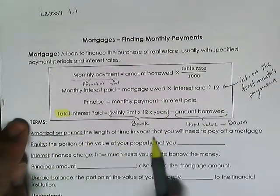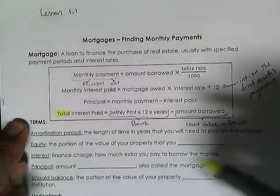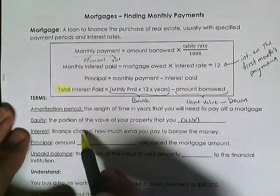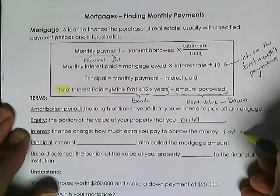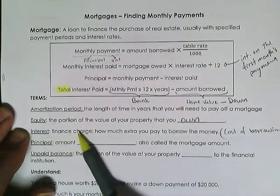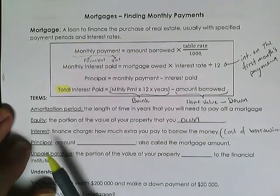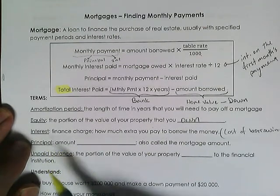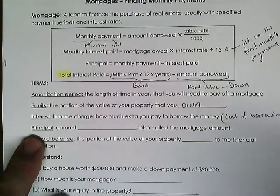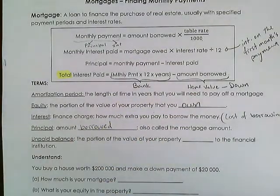Amortization period is the length of time in years you need to pay off a mortgage. Equity is the portion of the value of your property that you own. Interest is a finance charge — the cost of borrowing; it's how much extra you pay to borrow the money. Principal is the amount borrowed, also called the mortgage amount.